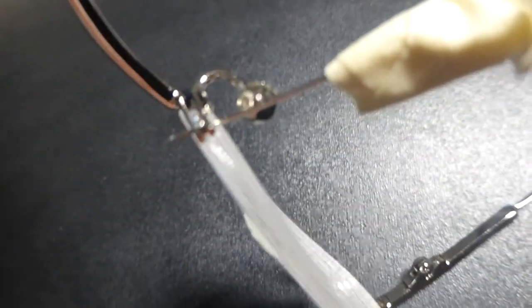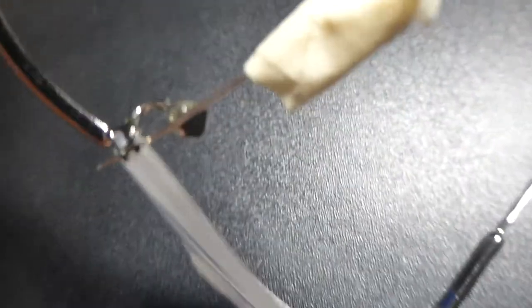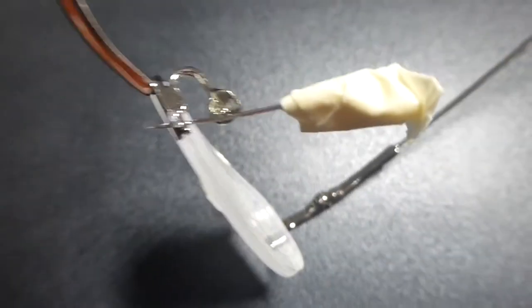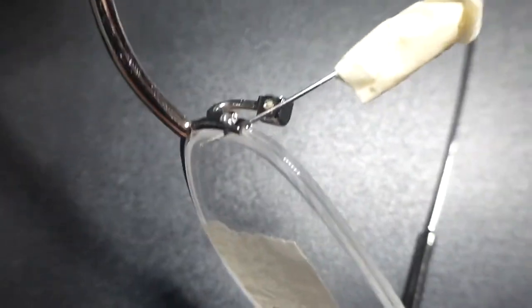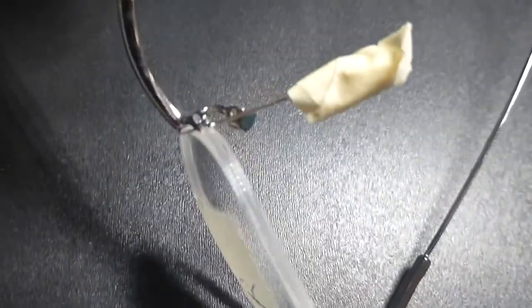I saw someone on YouTube showing how to use a push tack or a pin or something to get under the fishing line like this and then work around the lens.